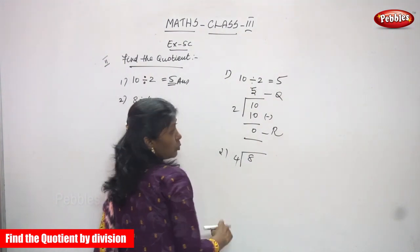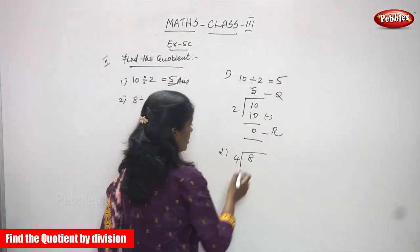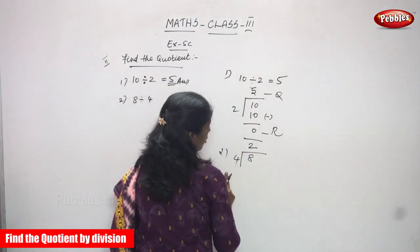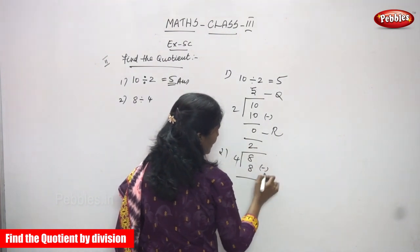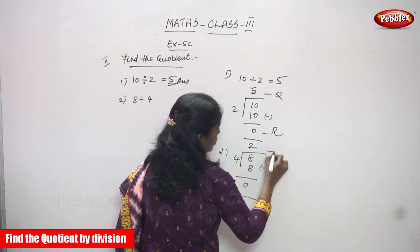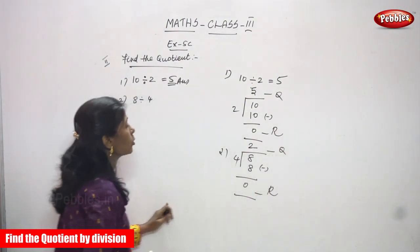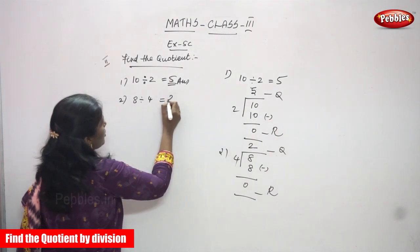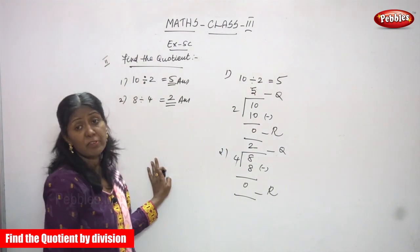1 four is 4 and 2 fours are 8. So you write 2, and 8 minus 8 equals 0. This is the quotient and this is the remainder. You have to find the quotient. The quotient is 2. 2 is the right answer for the question. This is the division method.